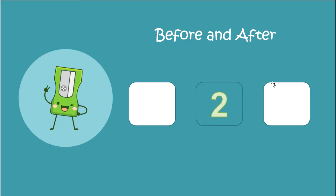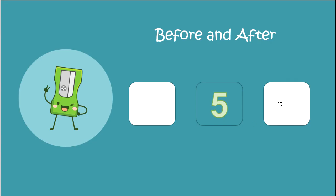Now, 2 — what number comes after 2 when we're counting? 1, 2, 3 — 3 comes after. And what number comes before 2? 1, 2 — 1 comes before. Let's look at the number 5. In our counting pattern, what comes after 5? 1, 2, 3, 4, 5, 6 — 6 comes after 5. And what comes before 5? 1, 2, 3, 4, 5 — 4 comes before.